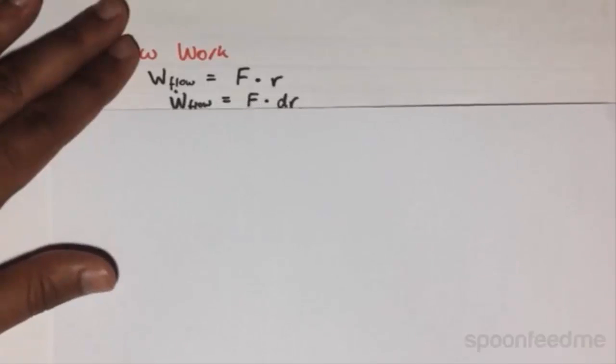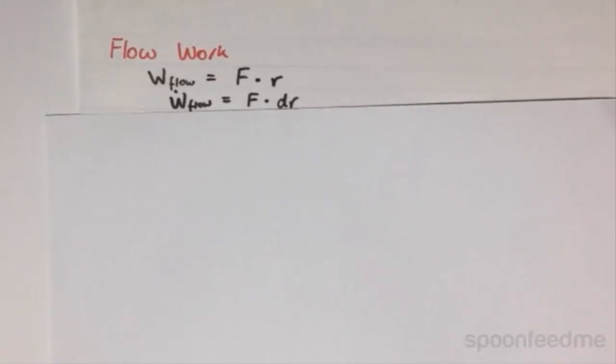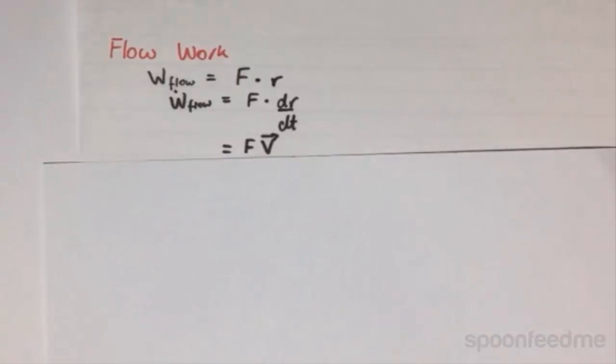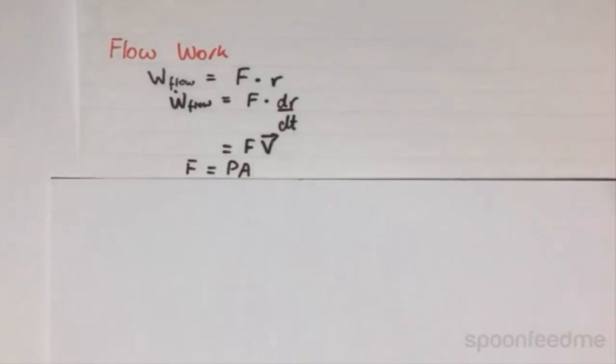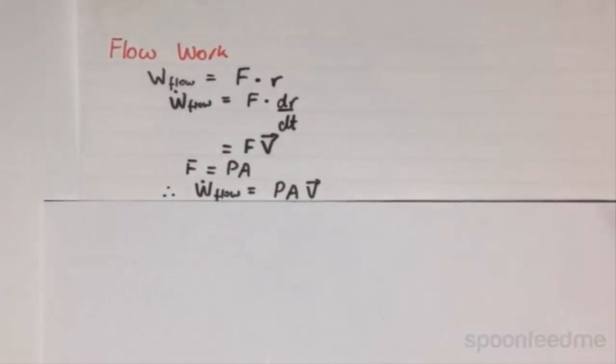If we differentiate with respect to time, we get the work flow dot equals f times dr/dt. That is just equal to f times v, and v is the fluid velocity which we found earlier. From fundamental physics again, the force is the pressure multiplied by the cross-sectional area. So finally, we get that the work flow dot equals pAv.